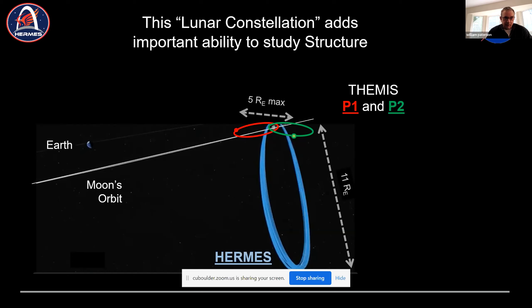We have an electron spectrometer and an ion spectrometer — all covering similar energy ranges. Hermes has the advantage that it's a mass spectrometer; Themis doesn't distinguish ions according to mass per charge, but Hermes will add that capability. There are magnetometers and energetic particle detectors. The three common instruments — spectrometers and magnetometer — give us a lot of reference points from the three different spacecraft.